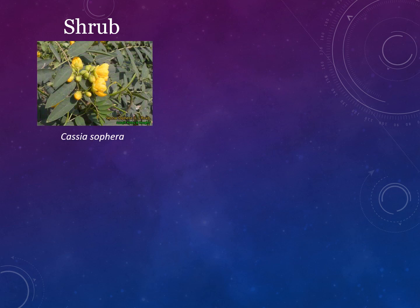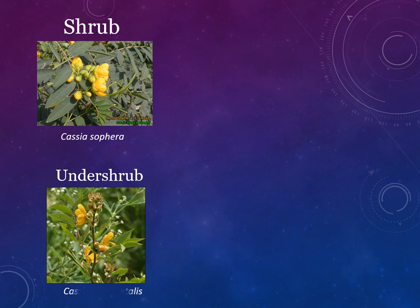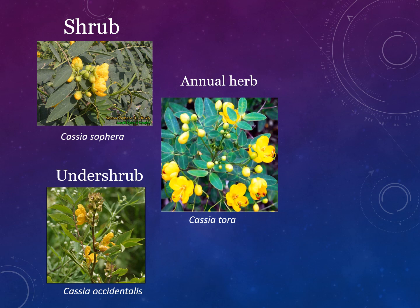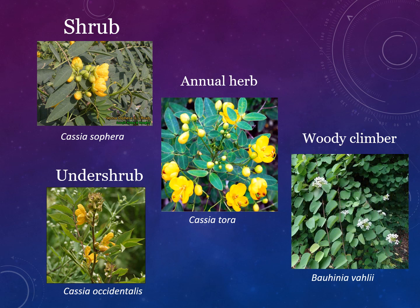For example, shrubs: Cassia sophera; undershrubs: Cassia occidentalis; annual herbs: Cassia tora; while woody climber: Bauhinia vahlii. We can say the family Caesalpinaceae shows very beautiful flowers. Personally, I like this family due to its beautiful flowers. It shows variety of habits like trees, shrubs, undershrubs, annual herbs, and woody climbers.